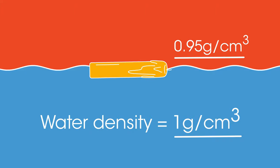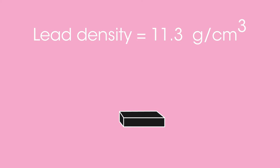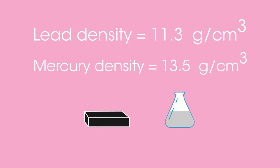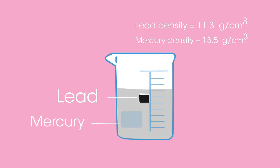Lead has a density of 11.3 grams per cubic centimeter and liquid mercury has a density of 13.5 grams per cubic centimeter. What would happen if a block of lead were placed in a beaker of liquid mercury? Pause the video while you think. The lead would float in the liquid mercury. So that's a fairly easy way of explaining why solid blocks float or sink.